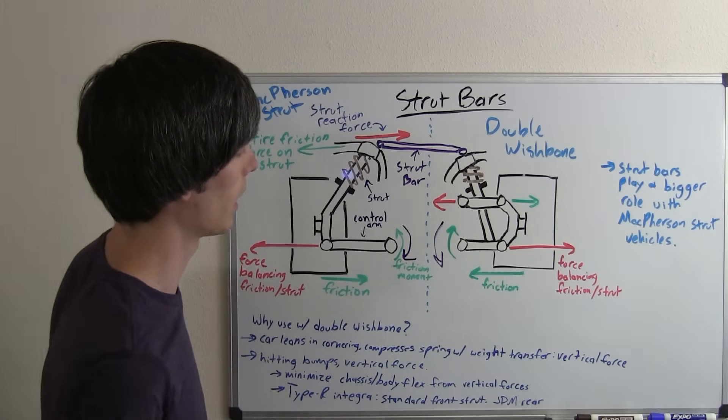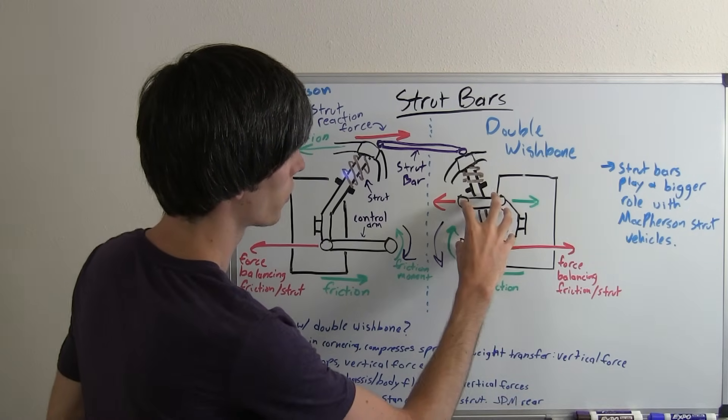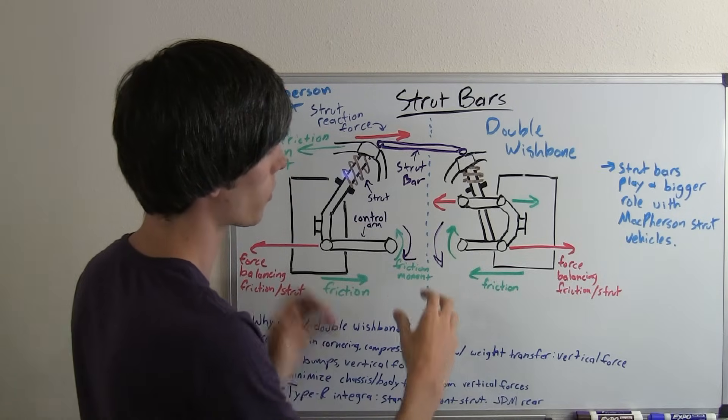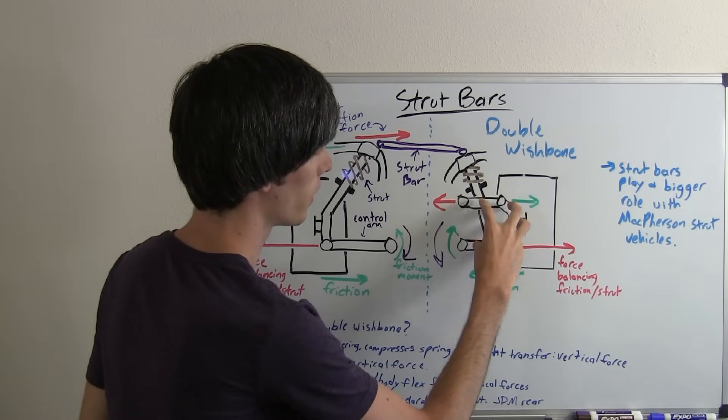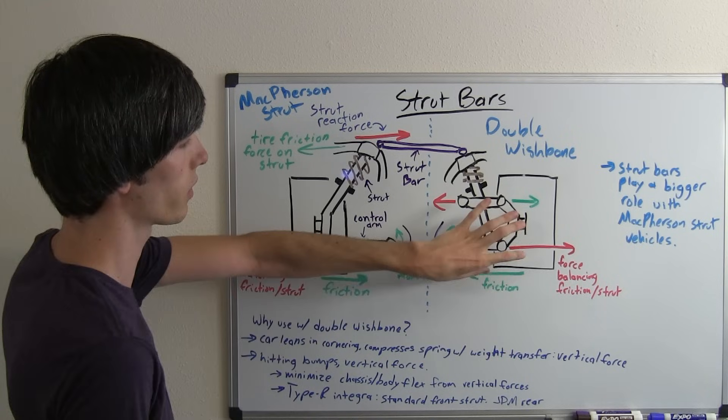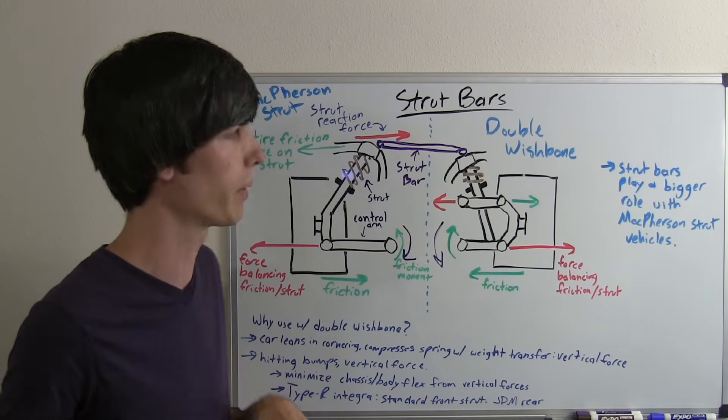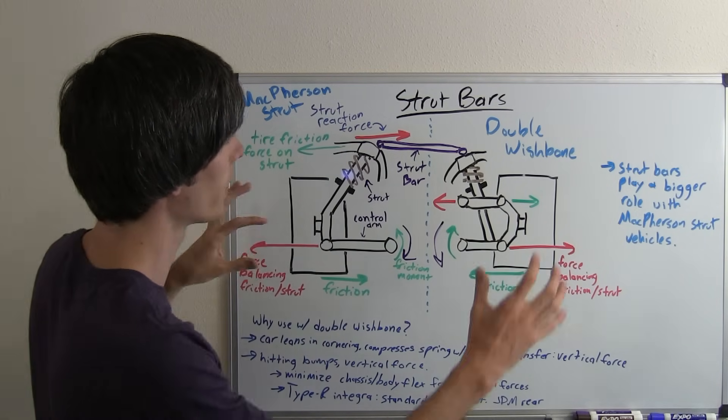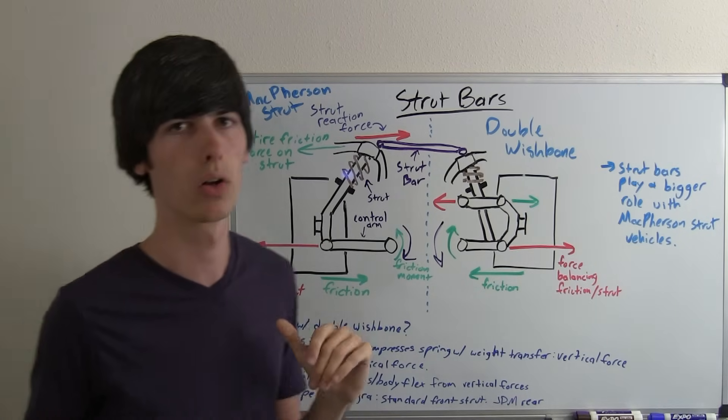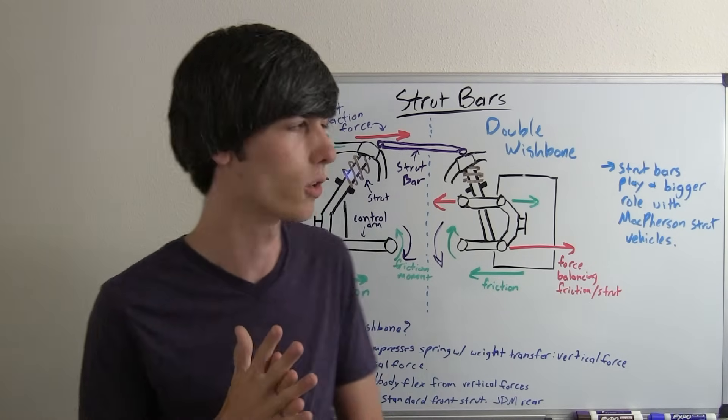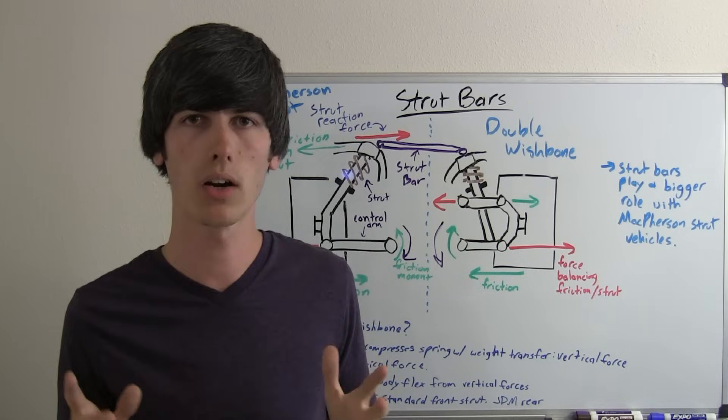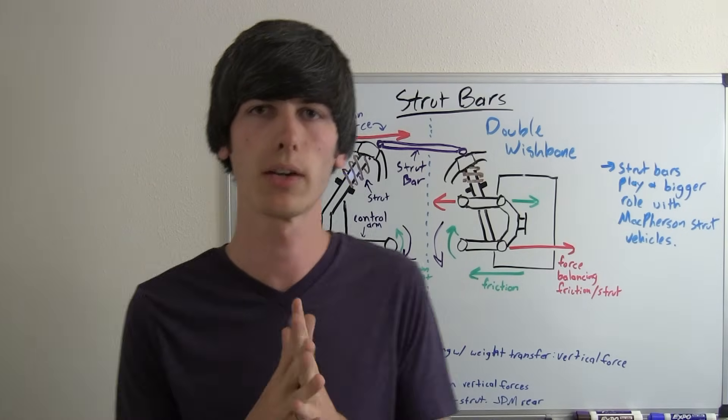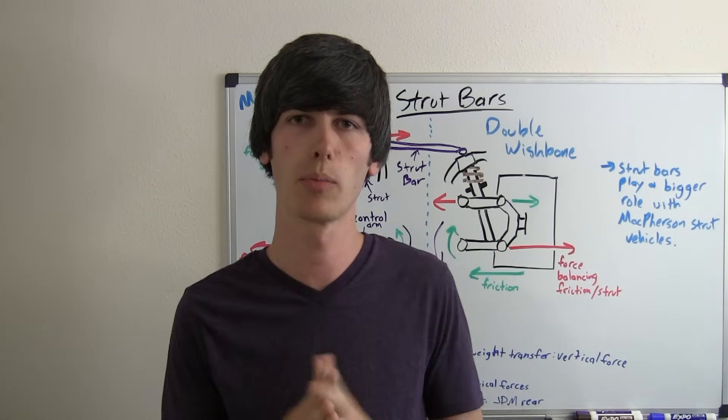So the lateral g-forces are all going to be absorbed within this suspension setup which is one of the advantages of a double wishbone suspension. That said, a strut bar will play a bigger role with a McPherson strut vehicle. For example these strut bars are for an Acura Integra and the base Integra does not come with strut bars.